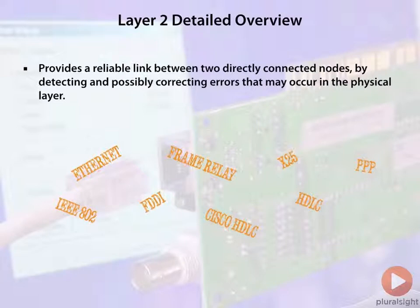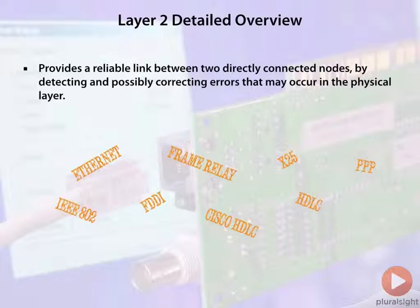The 802 protocols could be used for Ethernet — 802.3 Ethernet — or it could be 802.5, which is Token Ring. It could be wireless IEEE protocols. Regardless, Layer 2 handles these various encapsulation methods to give us a reliable link.